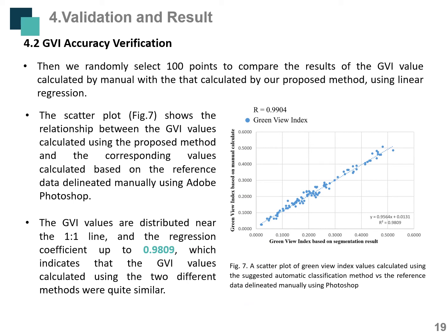The second part of validation is GVI accuracy verification. To verify the accuracy of the semantic segmentation, we randomly selected 100 points to compare GVI values calculated manually with those calculated by our proposed method using linear regression. From the results, GVI values are distributed near the 1-to-1 line and the regression coefficient reaches 0.98, indicating that GVI values calculated using the two different methods are quite similar.